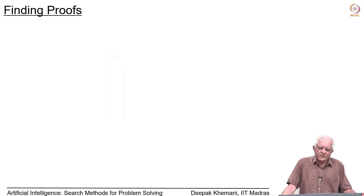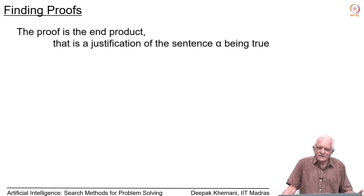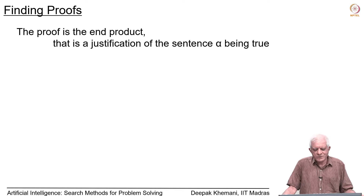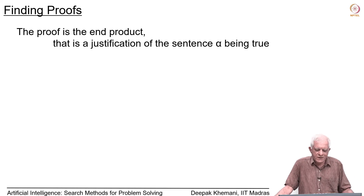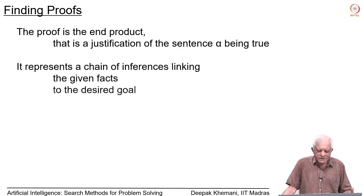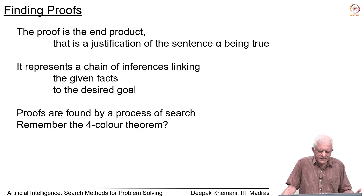Finding proofs is a process of going through search. The proof is only the end product — the justification of a sentence being true. It is a sequence of inferences. You may remember that in geometry, you write a proof: you say this is given, and therefore you can conclude this, and so on. You have a sequence of lemmas on the way, and eventually you prove the theorem. How you get the proof is the question, because we want machines to find proofs for us.